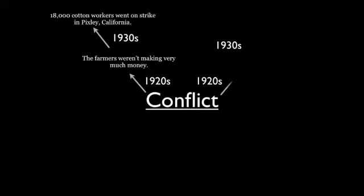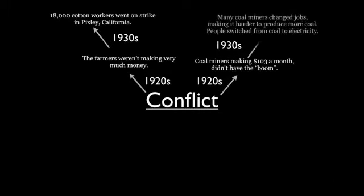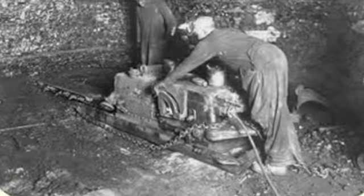My second point is that coal miners were only making $103 a month. They didn't have the industrial boom. Many coal miners changed jobs, making it difficult to produce coal, which made people change from coal to electricity.